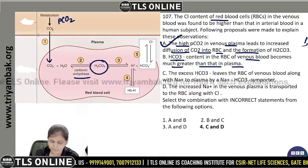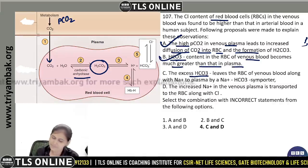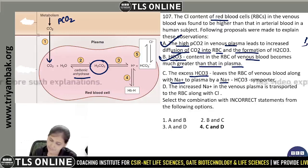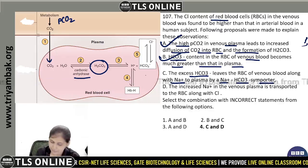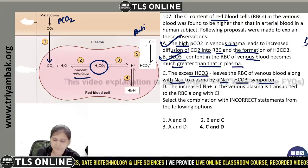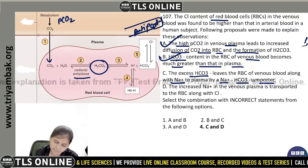The excess bicarbonate leaves the RBC of venous blood along with sodium to plasma by sodium bicarbonate symporter — No. The excess bicarbonate actually moves out of the RBC via the bicarbonate-chloride antiporter. So statement C is incorrect.